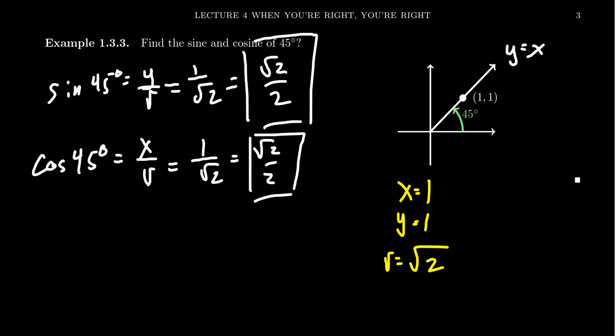We can do the same thing for the other trigonometric ratios at 45 degrees: tangent is y over x, cotangent is x over y, secant is r over x, and cosecant is r over y. As long as you have x, y, and r and you can check the definitions, you can handle all of these.